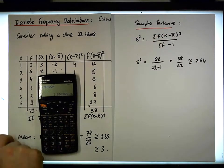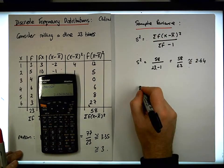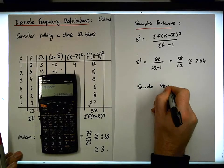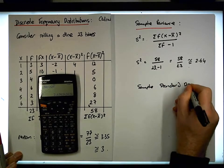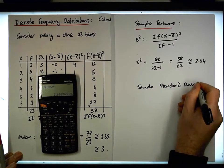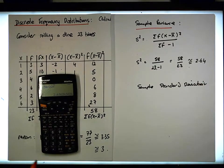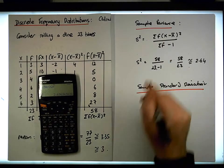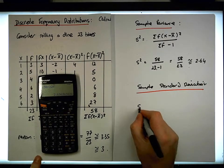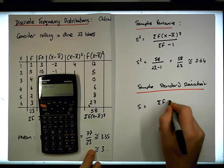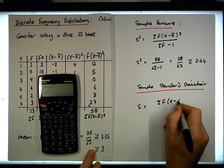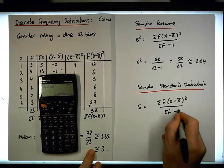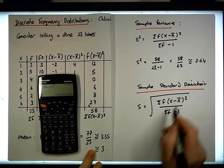Now, what about the sample standard deviation? The sample standard deviation is straightforward as well. It's simply the square root of variance. So s is the sum of the frequencies times the x minus x-bar squared, divided by the sum of the frequencies minus 1, and it's the square root of that.